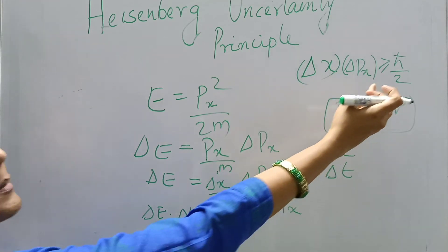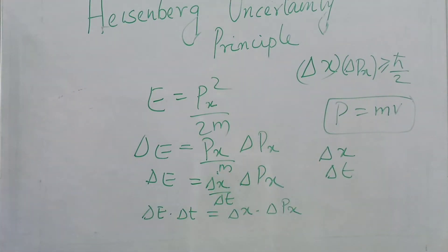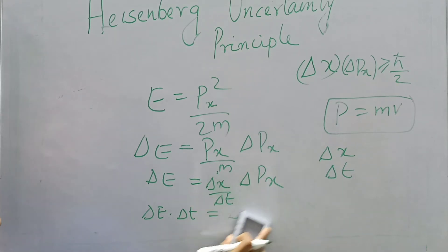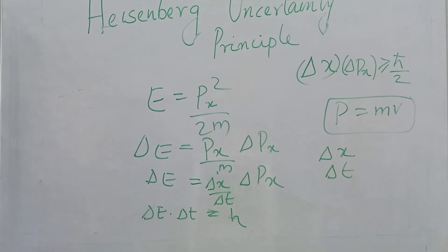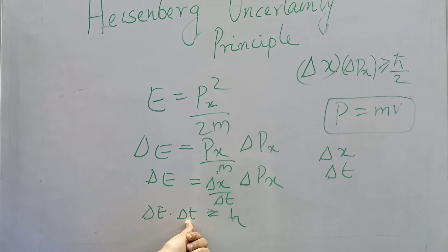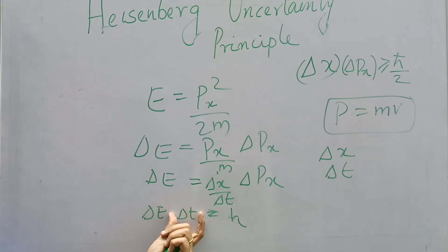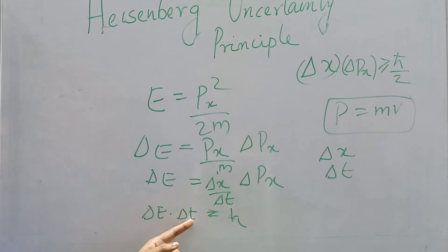This delta x into delta px is already known to be greater than or equal to h-cross by 2. So delta E into delta t is greater than or equal to h-cross, or of the order of Planck's constant h. This equation indicates that if a system is maintaining a particular state for a time delta t, its energy is uncertain by at least of order h/delta t.